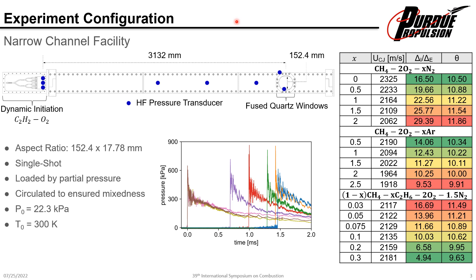This experiment is single shot. The gases are loaded by the method of partial pressures. We are able to circulate these gases for a few minutes before detonation initiation in order to ensure well-mixedness. The experiment is schematically shown in the top left. The test mixture lives in this three-meter section and is detonated by a dynamic initiation of equimolar acetylene and oxygen. The detonation progress is monitored by three pressure transducers at the head end, which monitor wave planarity, and five downstream, which are used to monitor the wave speed based on the method of timer variables.